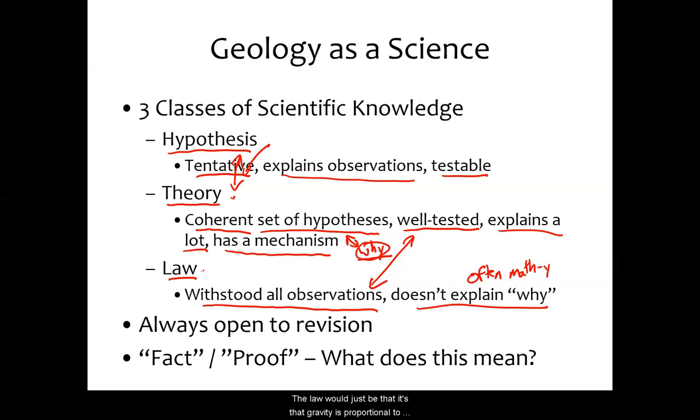The law would just be that gravity is proportional to the mass and inversely proportional to the square of the distance. You could write that as a mathematical law, but it doesn't tell you why gravity happens.